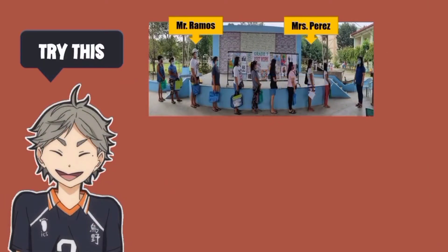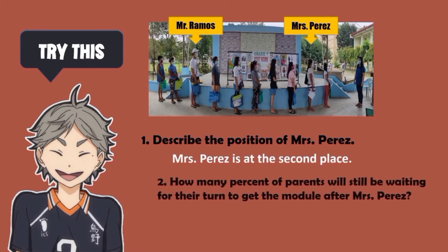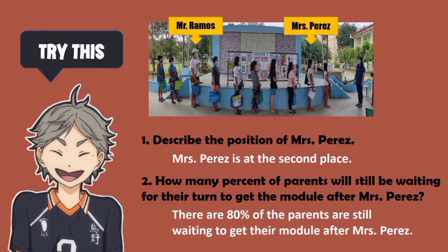Now, try this. Describe the position of Mrs. Perez. For number 2, how many percent of the parents will still be waiting for their turn to get the module after Mrs. Perez? There are 80% of the parents still waiting for their turn to get the module after Mrs. Perez.